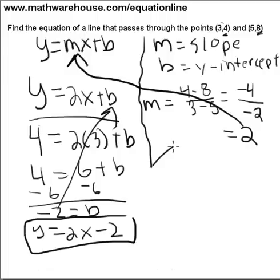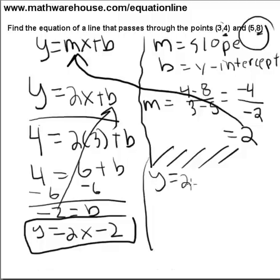Now, just to show you, you could have used this point here at this stage. If we had y equals 2x plus b, you know, we could have used 5, 8. It should give us the exact same equation, since at this point it's also on the line, just like 3, 4 is on the line.